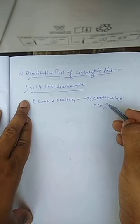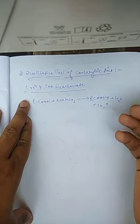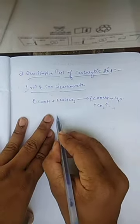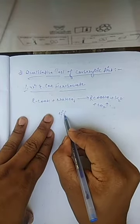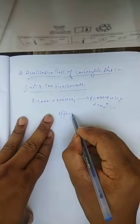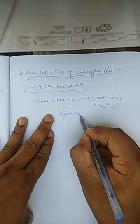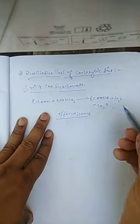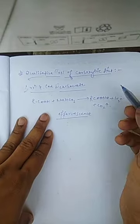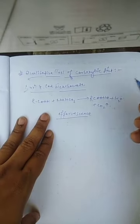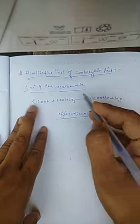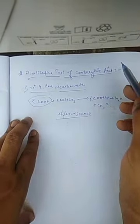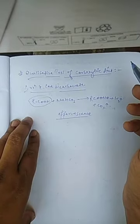It also produces water as well as carbon dioxide gas. When the carbon dioxide gas is evolved into the solution, it produces effervescence. So from this effervescence, we can identify that the given compound has the functional group carboxylic acid.